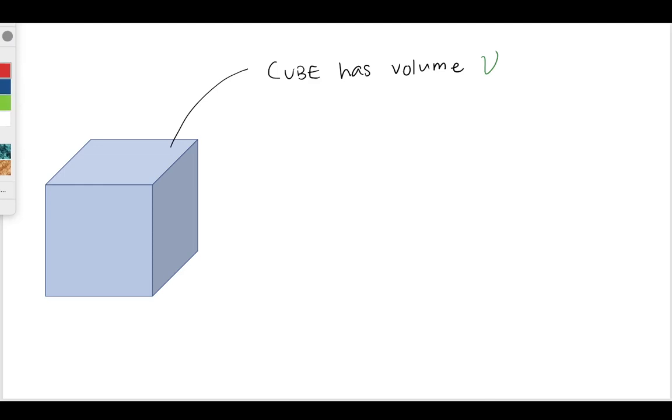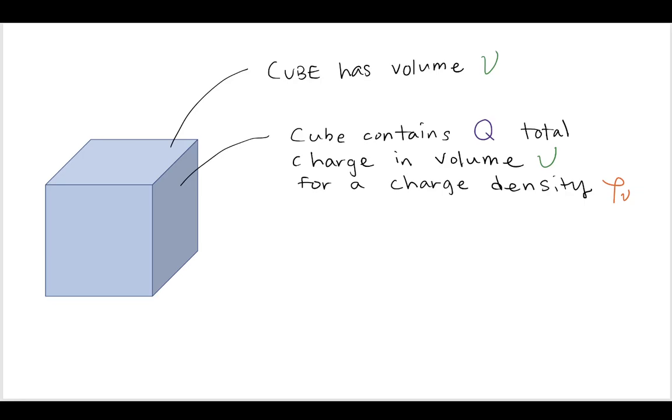So first, let's start with a cube, and we'll say the cube has some volume V. So we have a cube with a volume V, and we say that the cube contains Q, total amount of charge. So that cube is filled with little charge particles. The total amount is Q, and it's contained in that volume V.